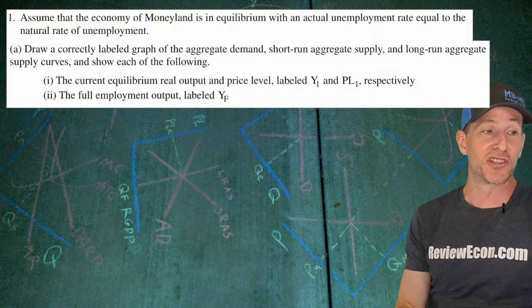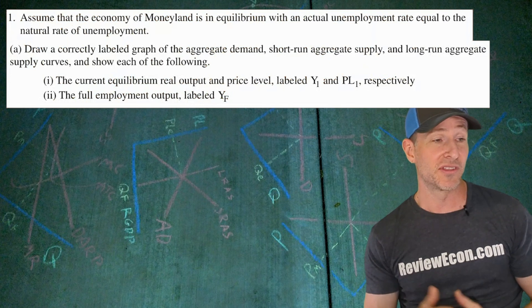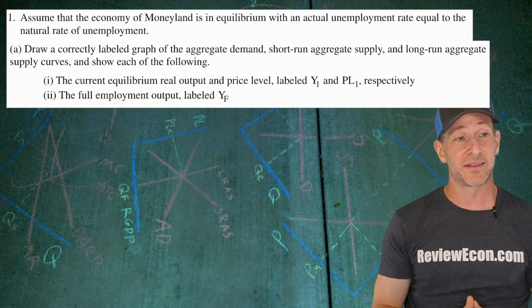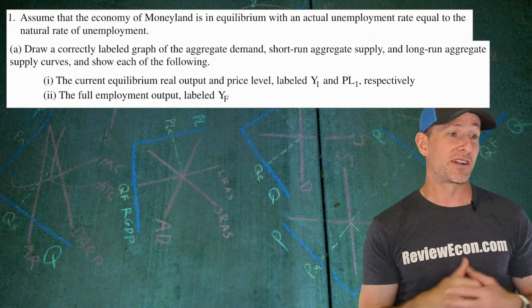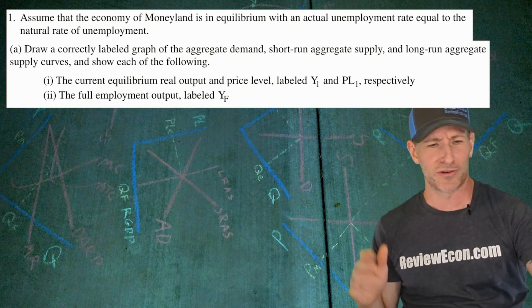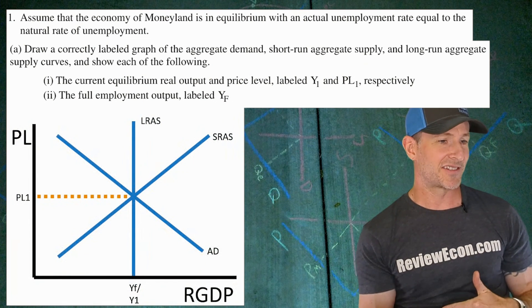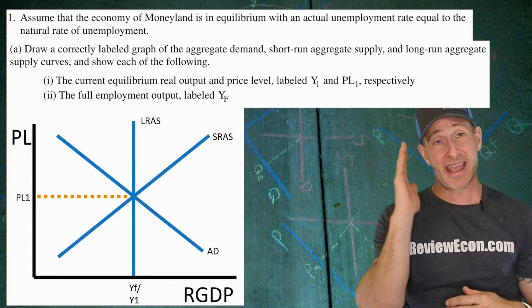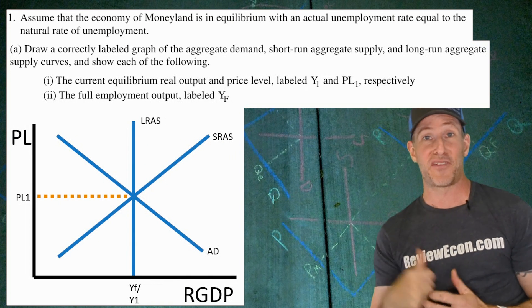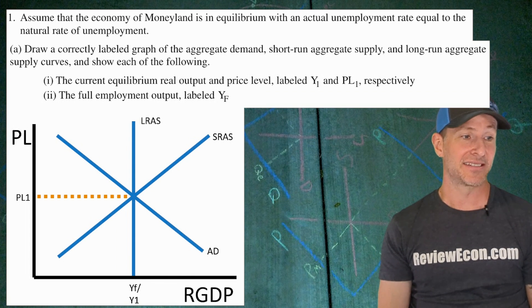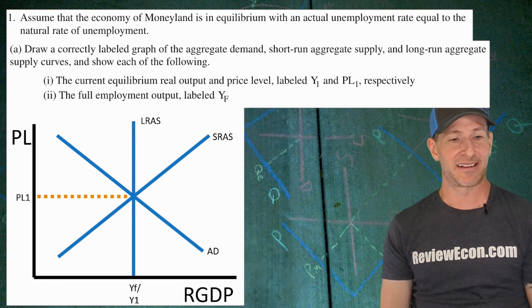First question: we're going to assume that the economy of Moneyland is in equilibrium with an actual unemployment rate equal to the natural rate of unemployment. We're drawing a correctly labeled graph of aggregate demand, short-run aggregate supply, and long-run aggregate supply. Typical graph at long-run equilibrium — upward sloping short-run aggregate supply, downward sloping aggregate demand, and at that intersection we have the long-run aggregate supply curve. We have YF and Y1 on the X axis, the price level marked, and axes labeled properly.